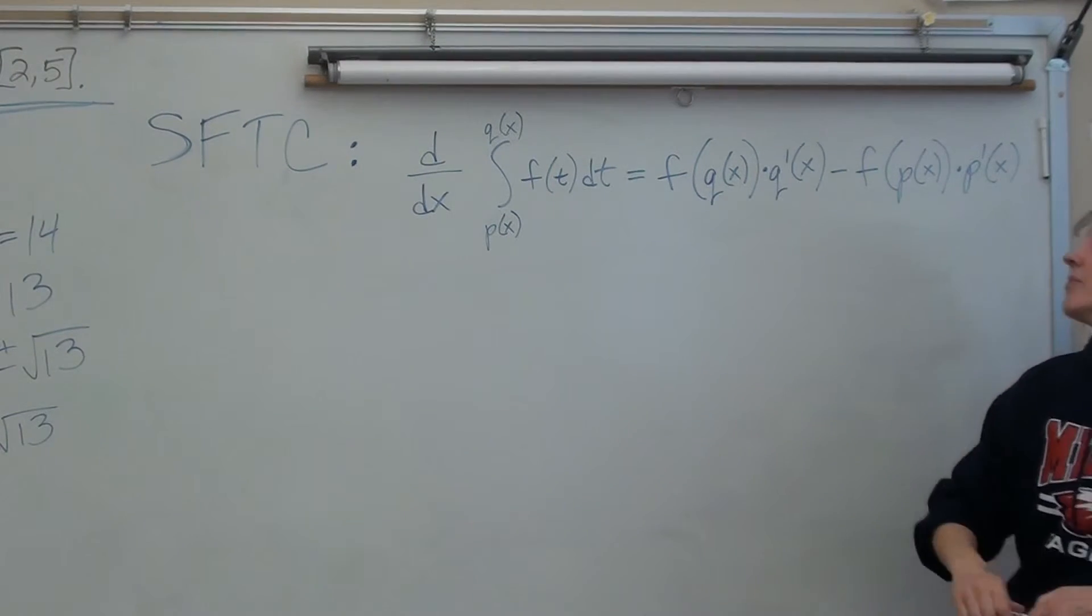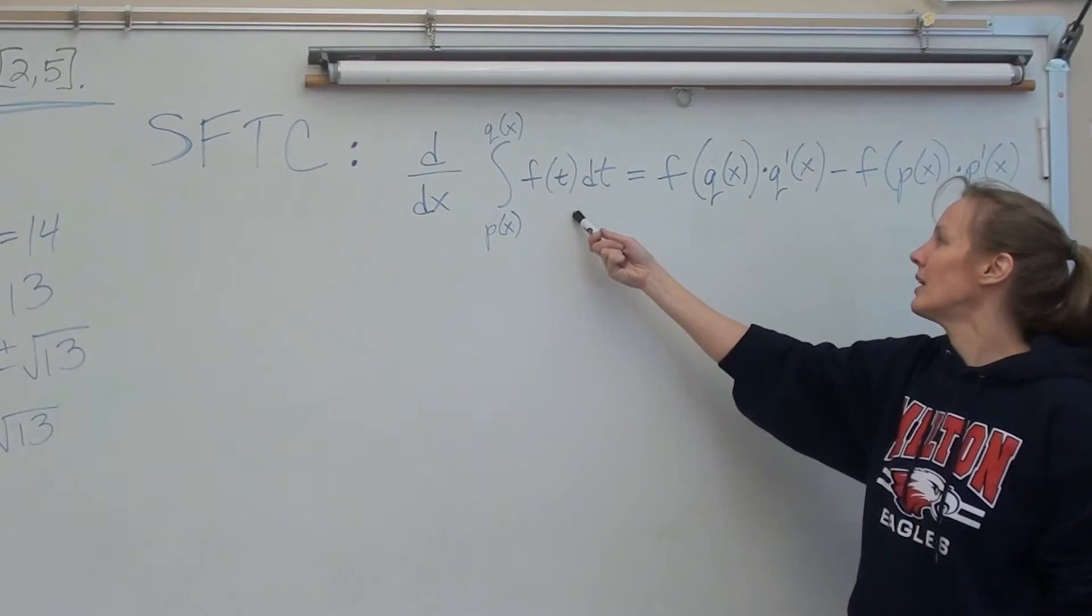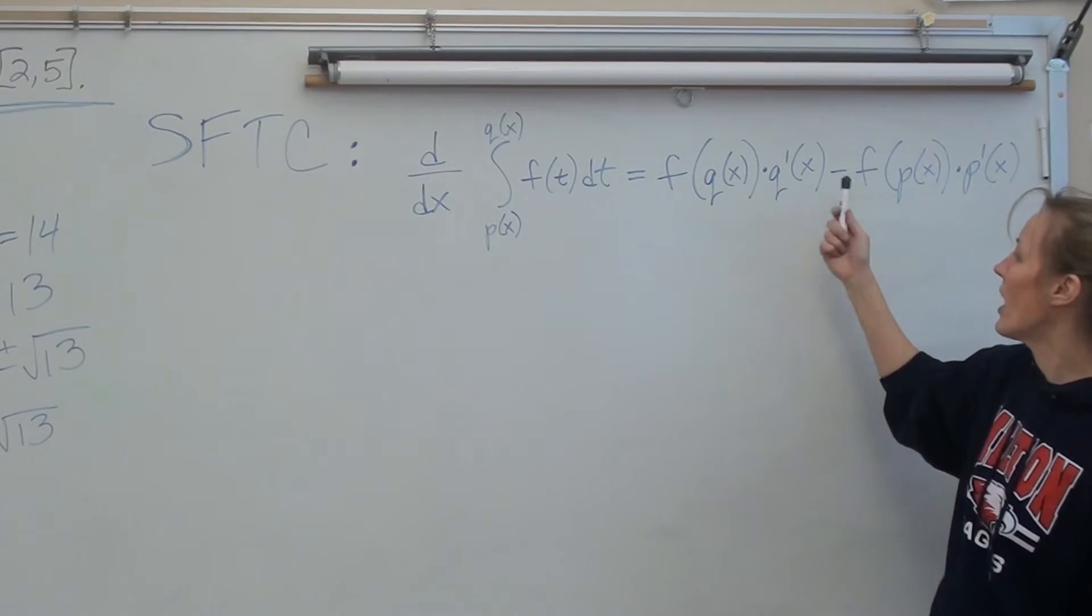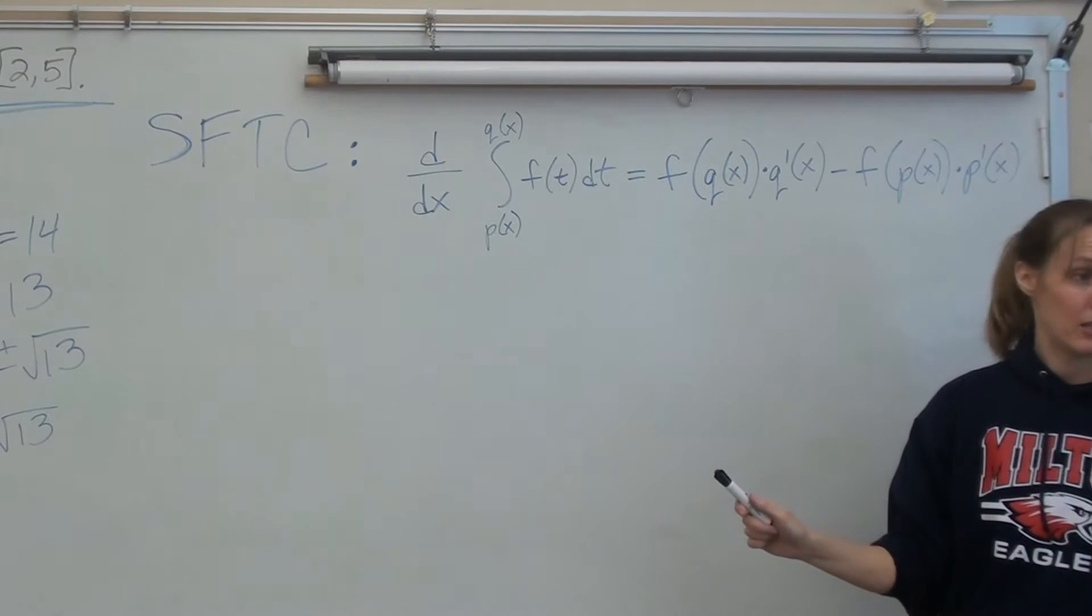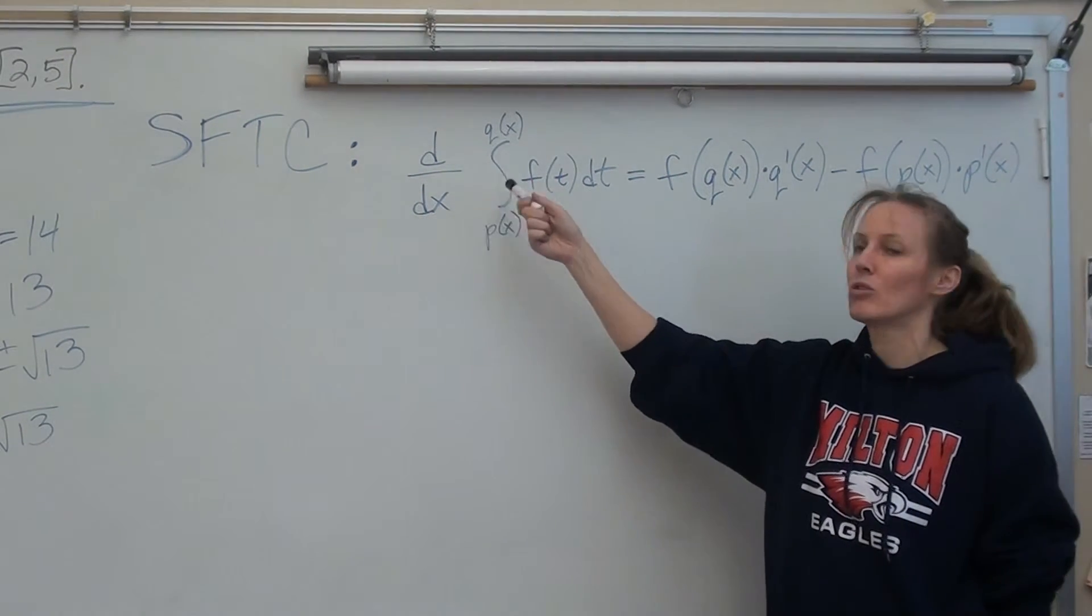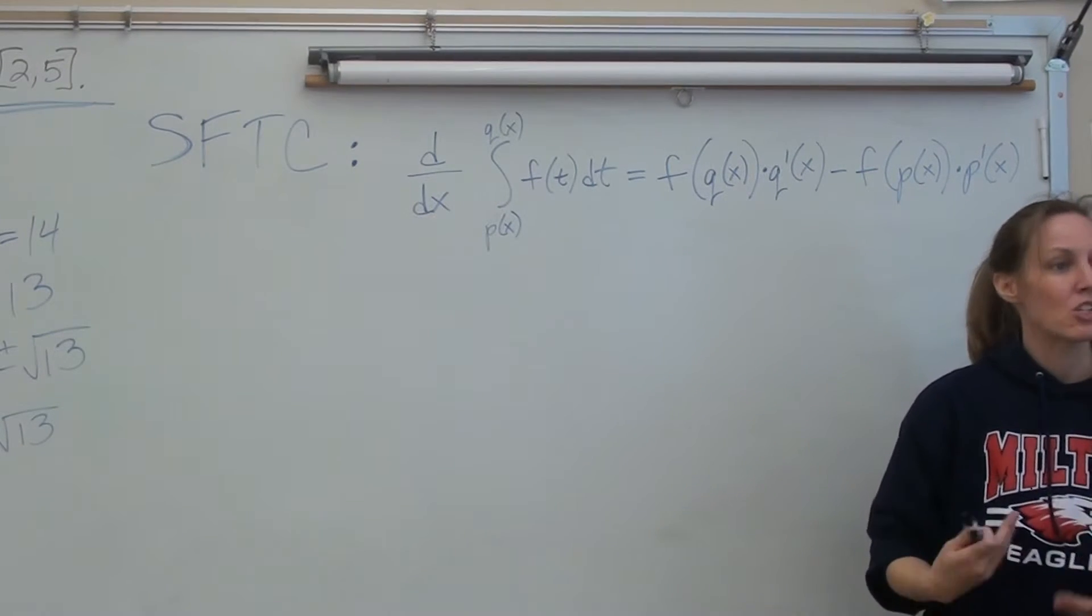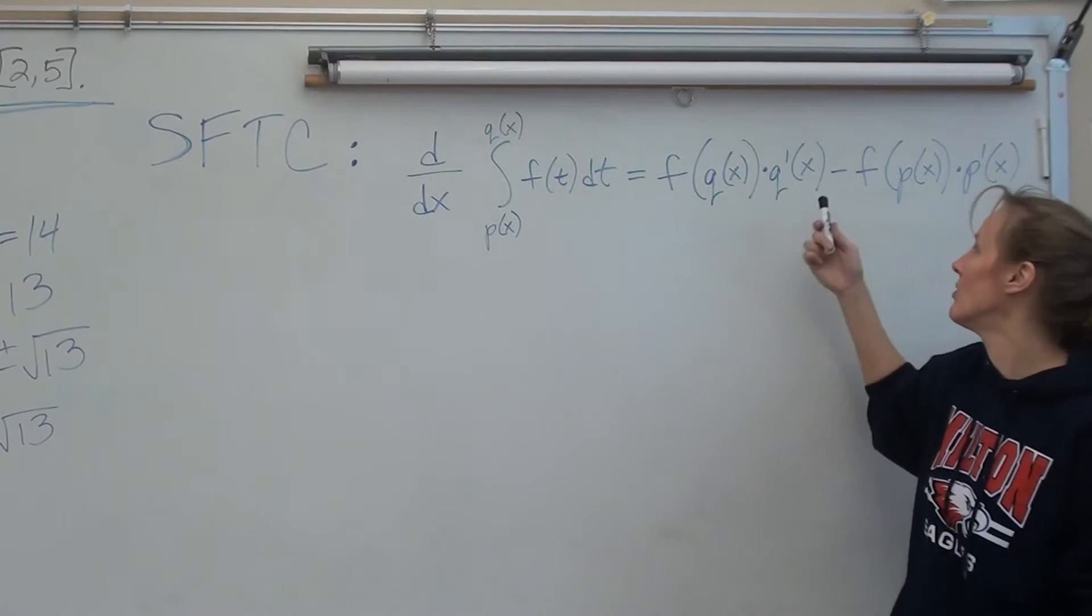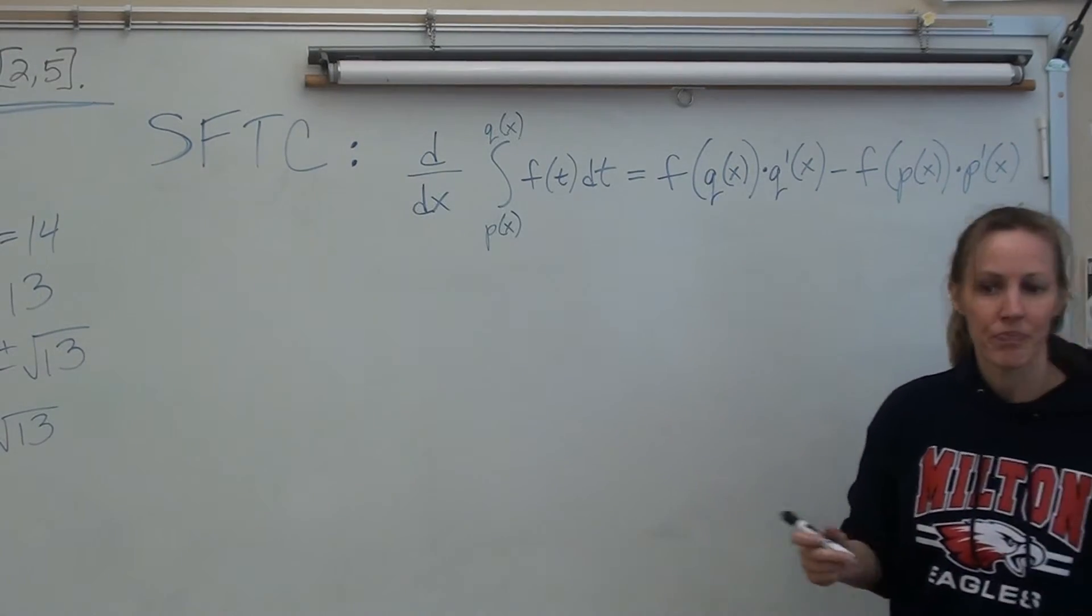Here's all it means. You take the top limit, plug it in, times it by its derivative. Then you subtract, take the bottom limit, plug it in, times it by its derivative. You never even find an integral. Do you remember how derivatives and integrals kind of undo each other? So you never have to actually anti-differentiate. All you do is take the top limit and plug it in, times it by its derivative. Subtract, bottom limit, plug it in, times it by its derivative.